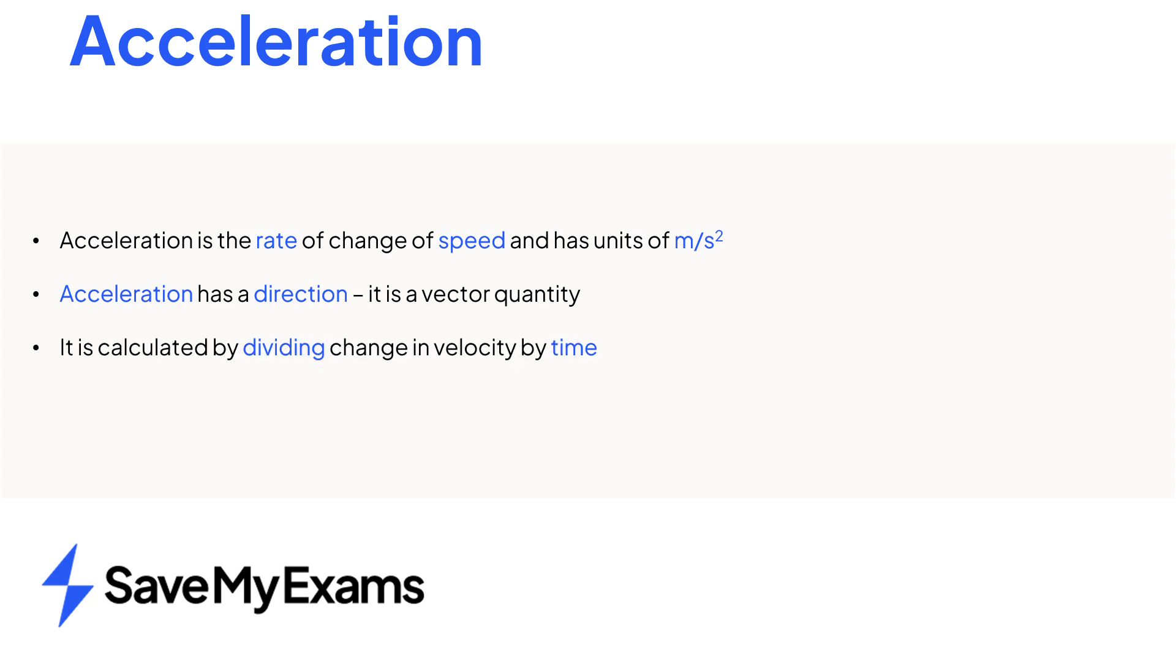In this video we covered the definition of acceleration as the rate of change of speed with units of meters per second squared. Acceleration is a vector quantity which is calculated as change in velocity divided by time, and you need to take care when looking at the directions of final and initial velocity, as their signs could be different.